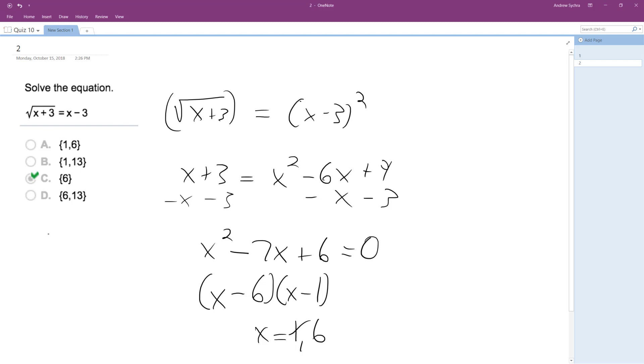But what about 6? Square root of 6 plus 3 is equal to 6 minus 3. So square root of 9, does it equal 3? Yes, it does. So our only solution is 6.